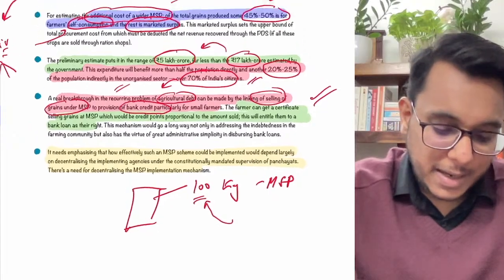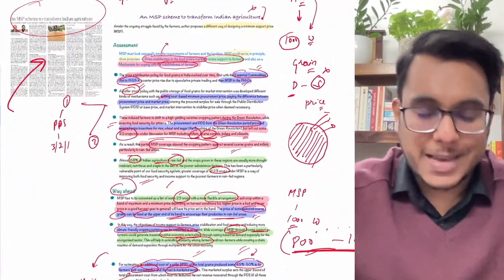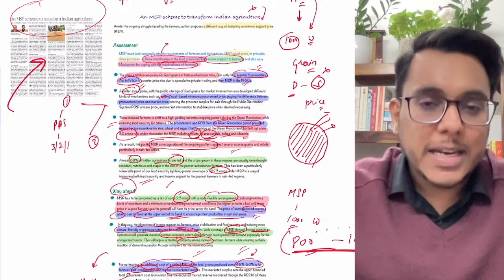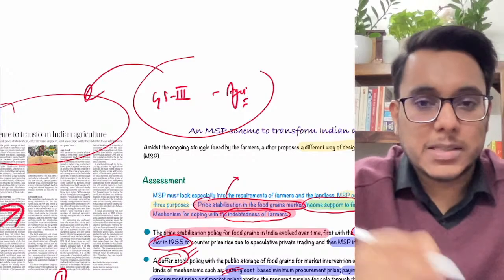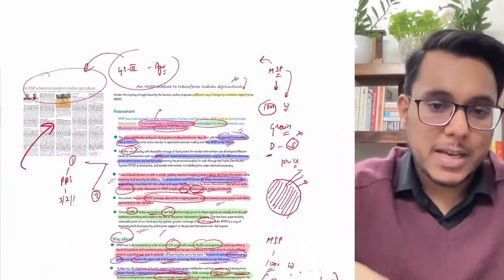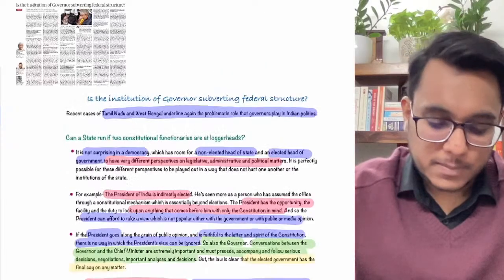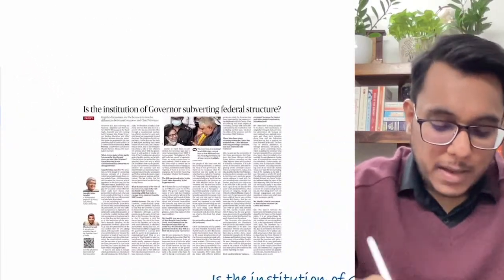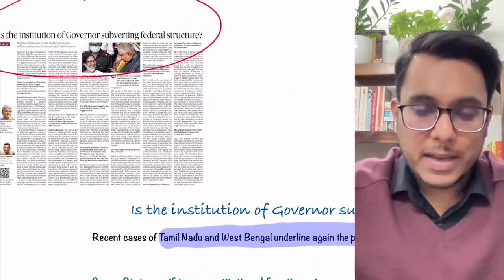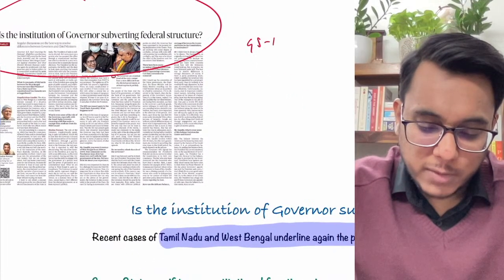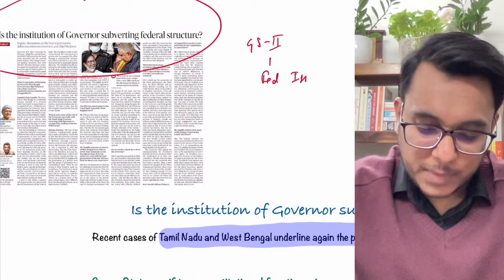MSP is directly important in GS Paper 3 — agriculture-related topics. Please note down all these points. Moving to the next article: 'Is the Institution of Governor Subverting the Federal Structure?' This will be important for GS Paper 2 — federal issues, constitutional issues, and political controversies.